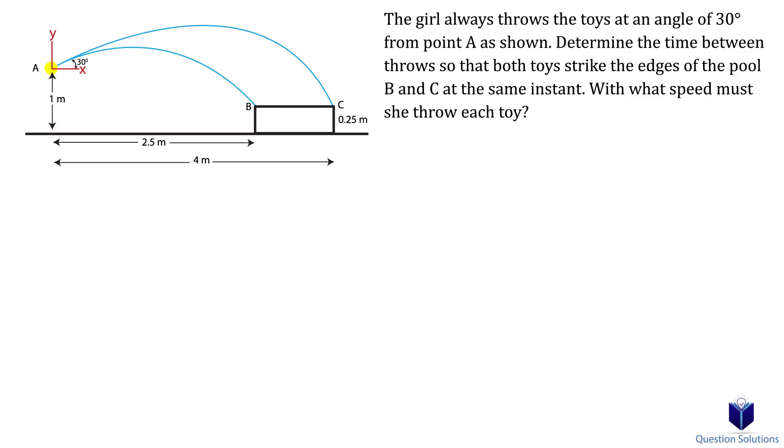In this problem, we need to find how fast she throws each toy so that it lands at points B and C, but also the time between the throws so that both toys impact the points at the same time.